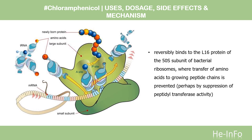Mechanism of Action: Chloramphenicol is lipid-soluble, allowing it to diffuse through the bacterial cell membrane. It then reversibly binds to the L16 protein of the 50S subunit of bacterial ribosomes, where transfer of amino acids to growing peptide chains is prevented, perhaps by suppression of peptidyl transferase activity, thus inhibiting peptide bond formation and subsequent protein synthesis.